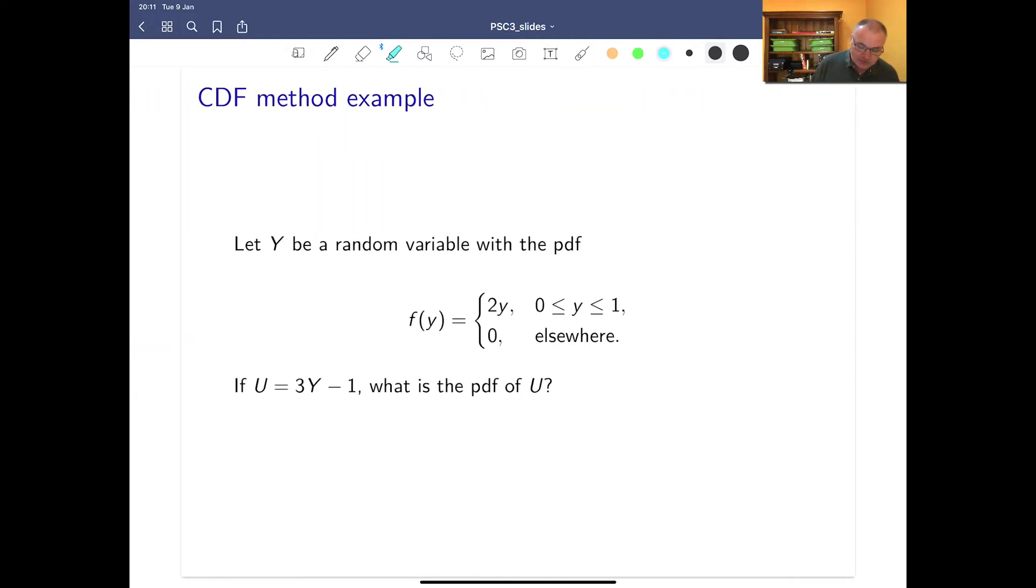The best way to illustrate this is with an example. So we've got Y is a random variable. It has this PDF. It's defined between 0 and 1 to be 2Y and everywhere else it's 0.